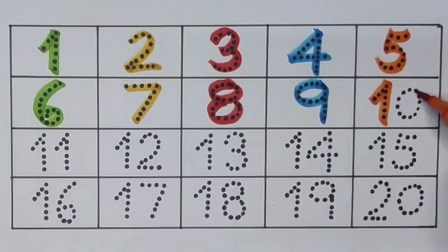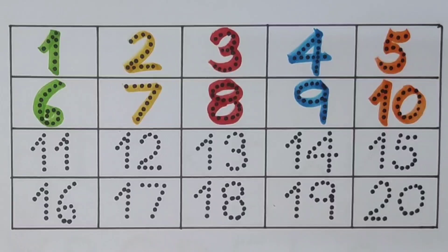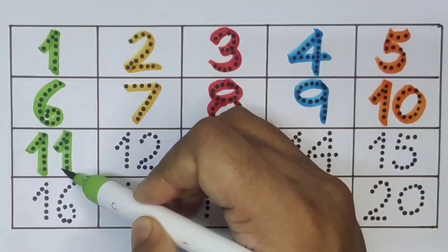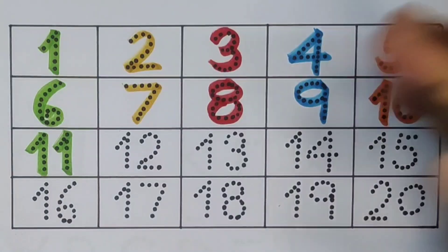Ten, number ten. Next, eleven: one one, eleven, number eleven. Next, twelve: one two.